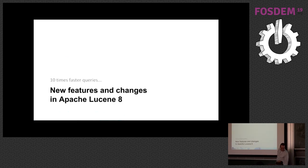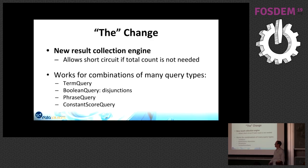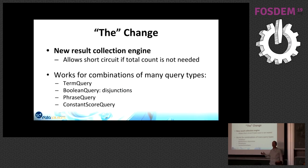The first thing that will change in Lucene 8 is 10 times faster queries, and indeed that's really happening. The most important change is that Lucene got a new result collection engine. When it executes a query, the way results are collected was changed — you can short-circuit the search. If you do not need the exact count of matches, you don't need to score all of them.